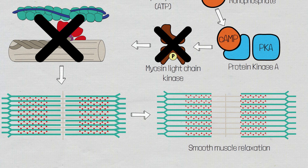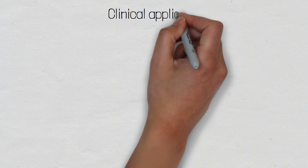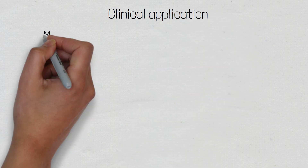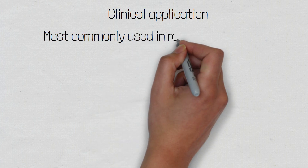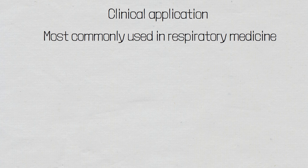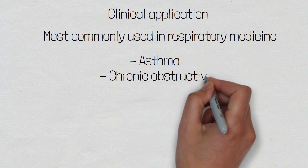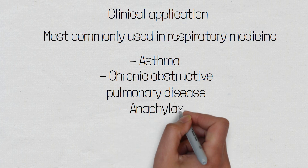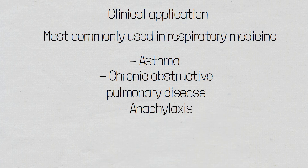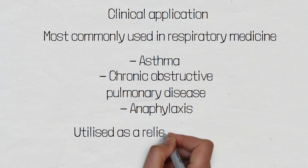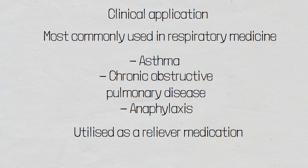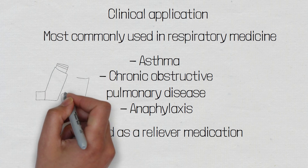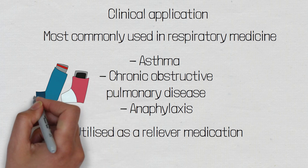Now that we have an understanding of how salbutamol works, let's look at its clinical application. Salbutamol is most commonly used in respiratory medicine to relieve the symptoms of an asthma attack or other conditions associated with reversible airway obstruction, such as exacerbations of chronic obstructive pulmonary disease and anaphylaxis. Due to the short-acting nature of salbutamol, it is used as a reliever therapy, meaning patients use it when they are experiencing symptoms. Longer-acting beta-2 agonists can be used in the prevention of symptoms in asthma and COPD.